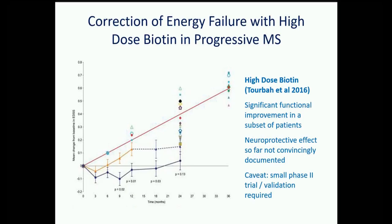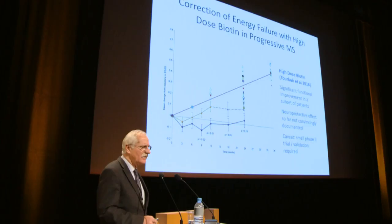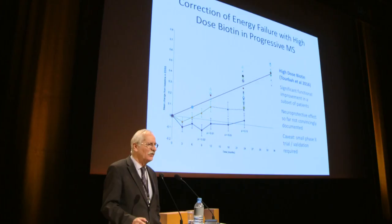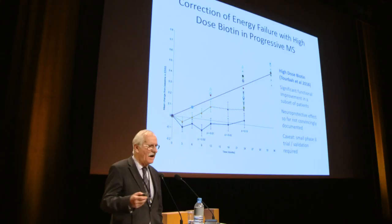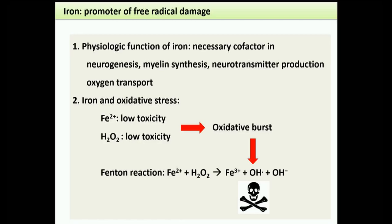Given mitochondrial damage and energy deficiency, a therapeutic strategy to increase energy availability is relevant — this may be how high-dose biotin works. This creates a scenario where clinical endpoints can include not just stopping progression but potentially improving disability by restoring the energy deficit. Whether promising primary results will hold in larger studies remains to be seen.